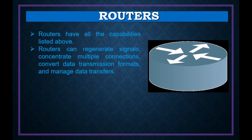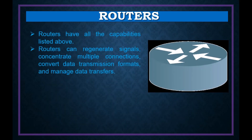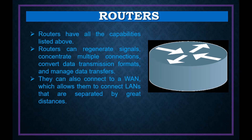A switch can only communicate within the same network. A router is more advanced — it allows you to communicate between two different IP addresses, different companies, different regions, or different geographical locations. If I am running one company and another person is running another company, and we want to communicate, the router helps us. Routers generally operate in the WAN area.